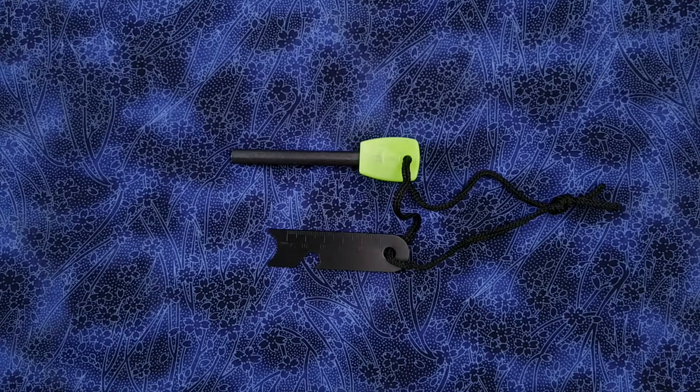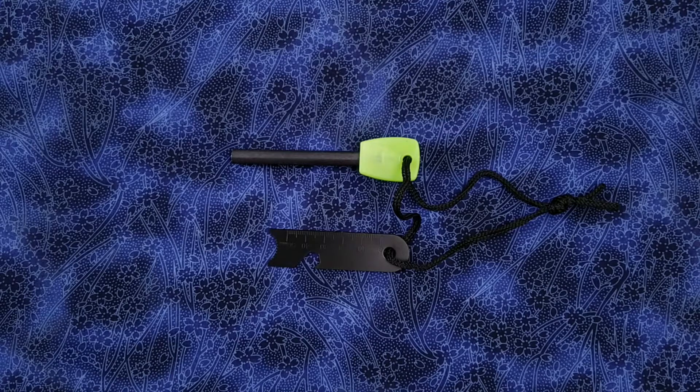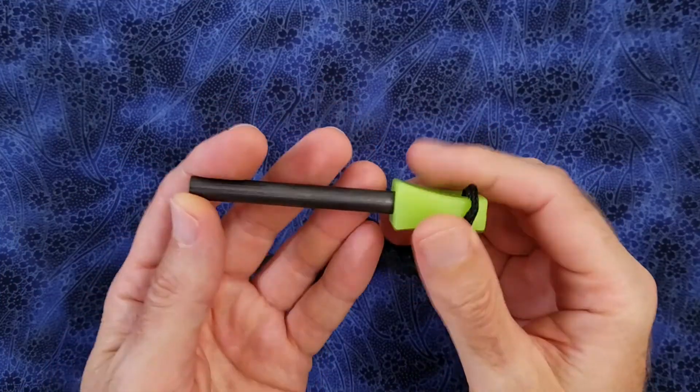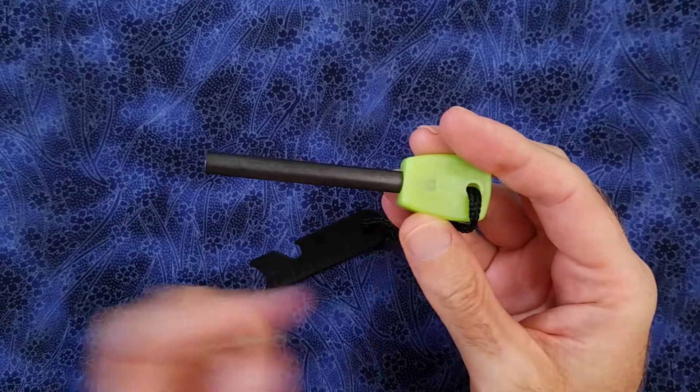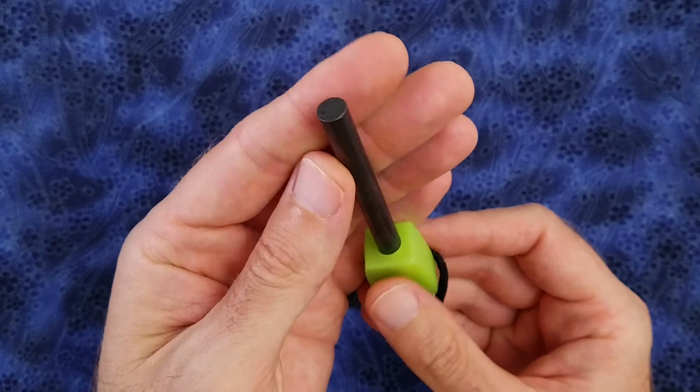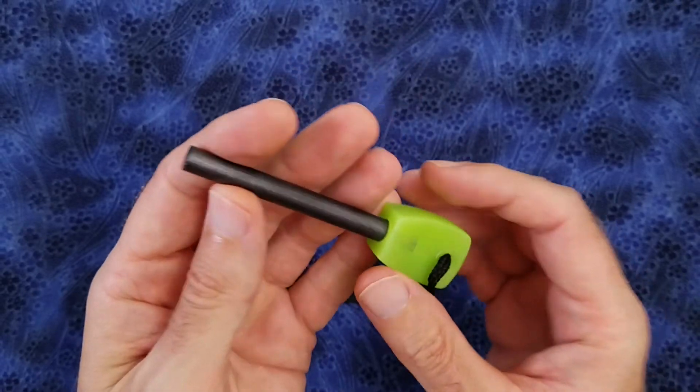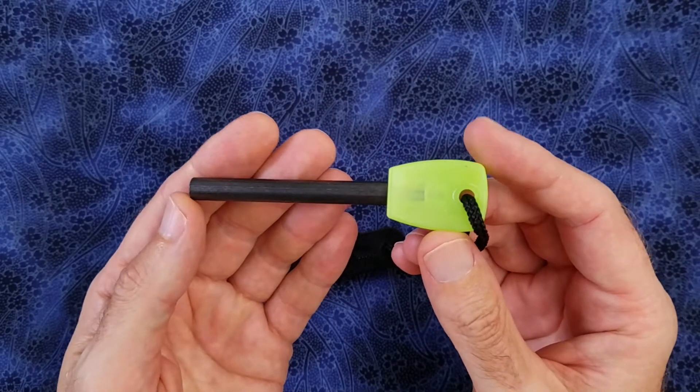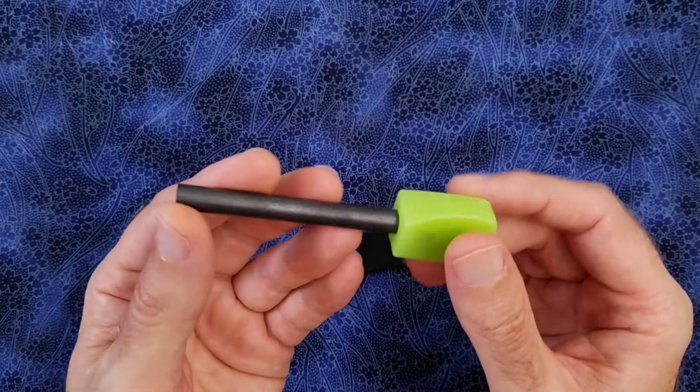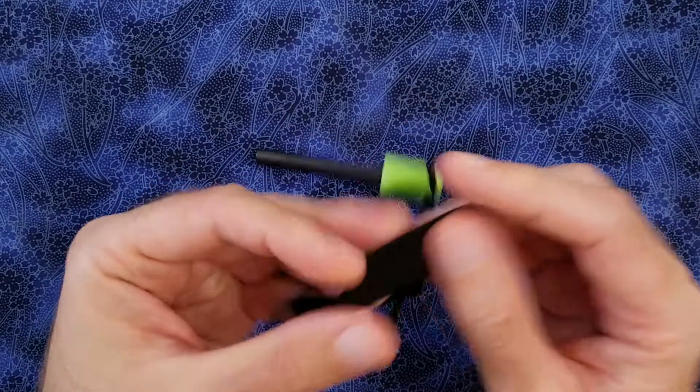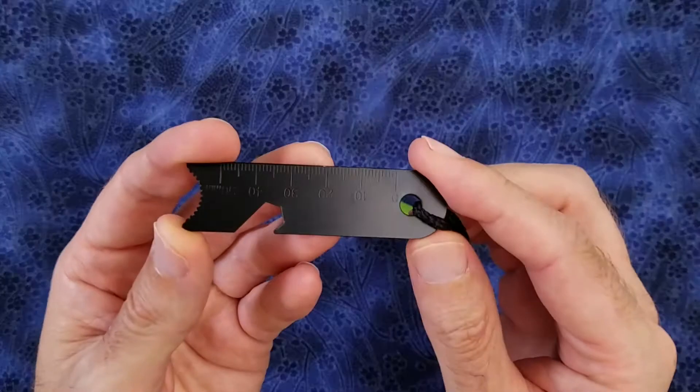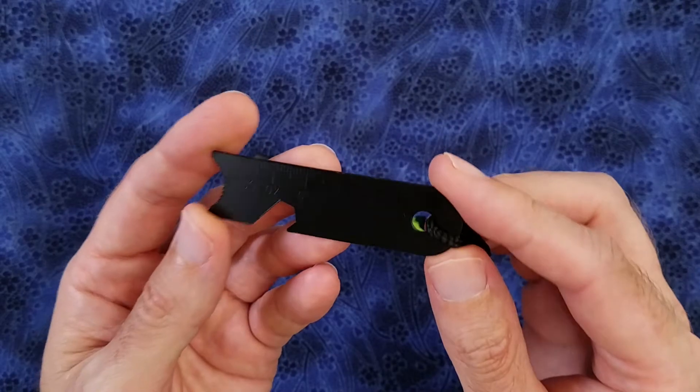Let me briefly go over the specs as measured by myself. We have an overall length of 3.9 inches and an exposed rod length of 2.6 inches. The diameter of the rod is 8 millimeters or a tad over 5 sixteenths of an inch. The weight of the rod is 1.2 ounces. The weight of the steel striker is 0.4 ounces for a combined weight of 1.6 ounces.